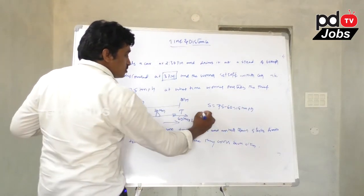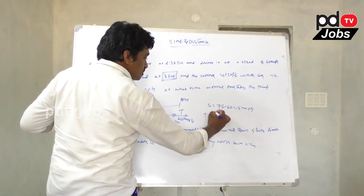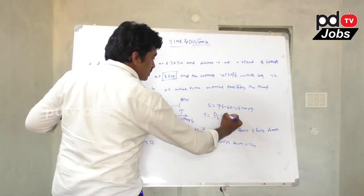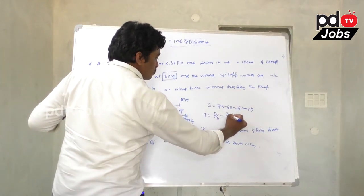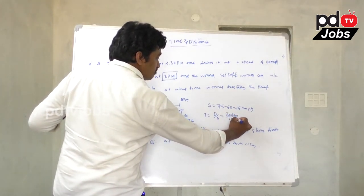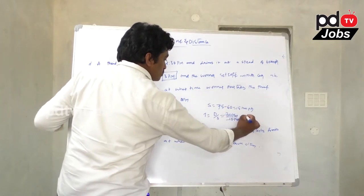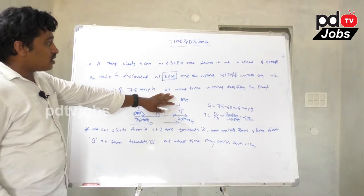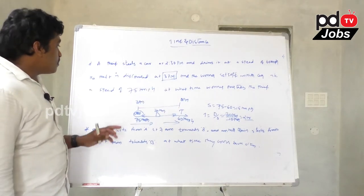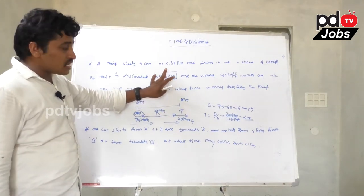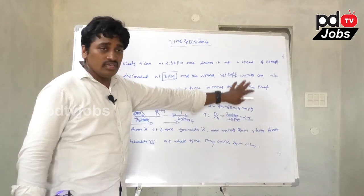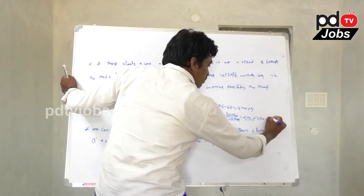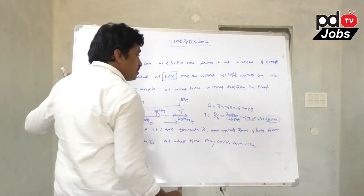The formula for time is distance divided by speed. Distance is 30 km, speed is 15 kmph, so time equals 30 divided by 15 equals 2 hours. The owner starts at 3 PM, so 2 hours after 3 PM equals 5 PM. The owner overtakes the thief at exactly 5 PM.